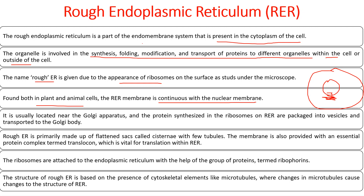RER is also usually located near the Golgi apparatus, and proteins synthesized by ribosomes on RER are packaged into vesicles and transported to the Golgi body. Rough ER is primarily made up of flattened sacs called cisternae with few tubules. The membrane also provides an essential protein complex called the translocon, which is vital for translation within the RER. Ribosomes are associated with the ER membrane via glycoproteins called ribophoreins, and microtubule changes affect the structure of RER.